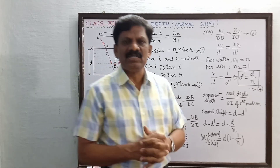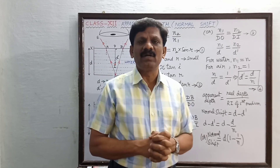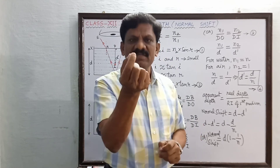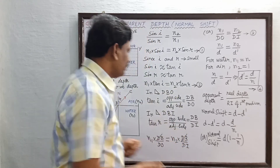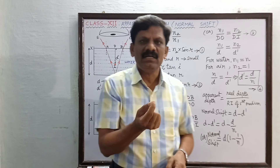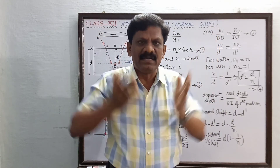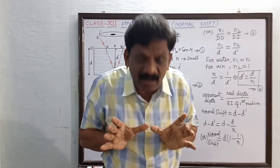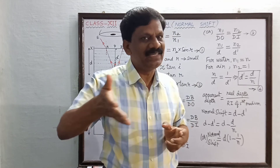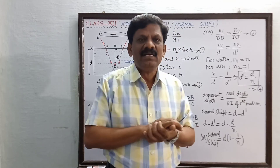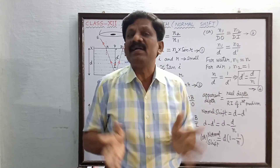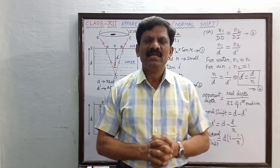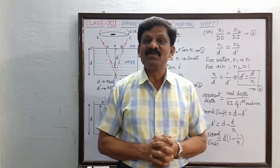In competitive exams like JEE and board exams, a common application question is: if a point light source (LED bulb) is kept inside a water tank at point O and switched on, a viewer from the top sees a circular patch of light — find the area of this circular patch. This type of question is asked in both board and competitive examinations.